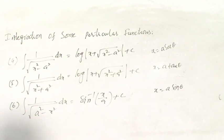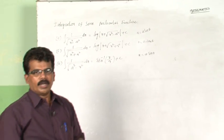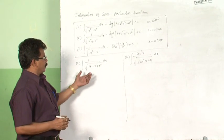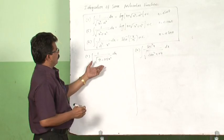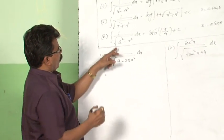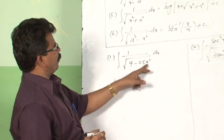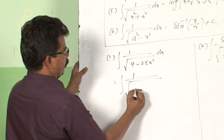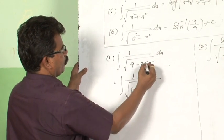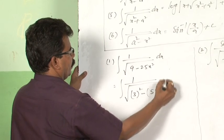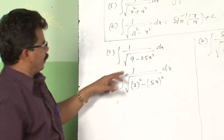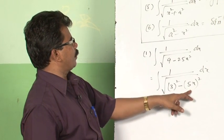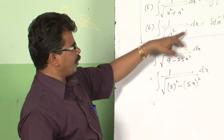Now let us see how to solve some problems of this form. The first example is integral 1 by root of 9 minus 25x square dx. This can be reduced into the form: 9 can be written as 3 square, and 25x square can be written as 5x whole square. This is reduced into the form of integral 1 by root of a square minus x square.